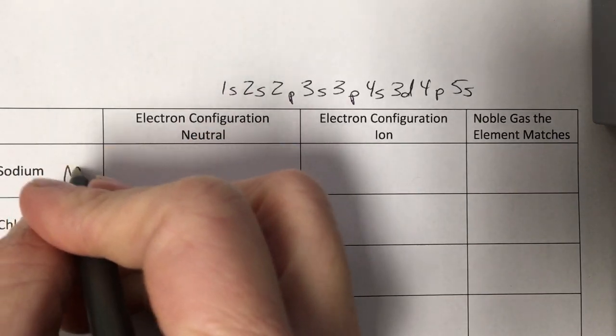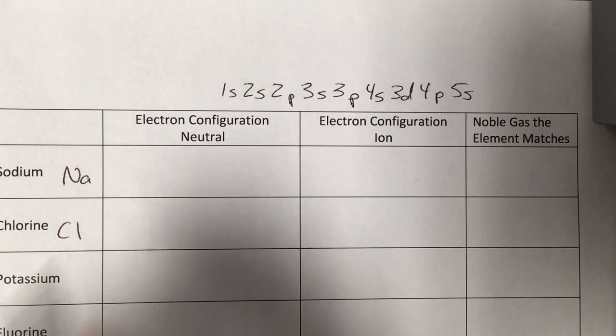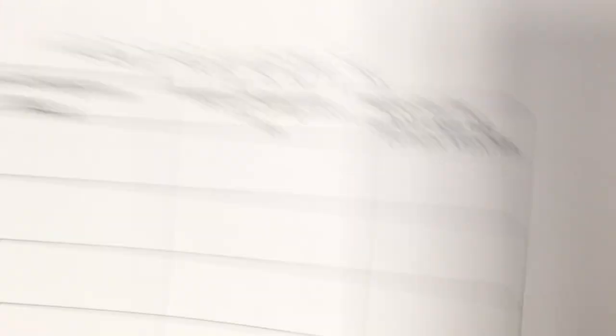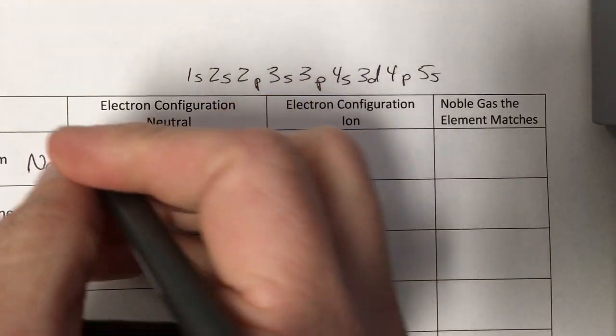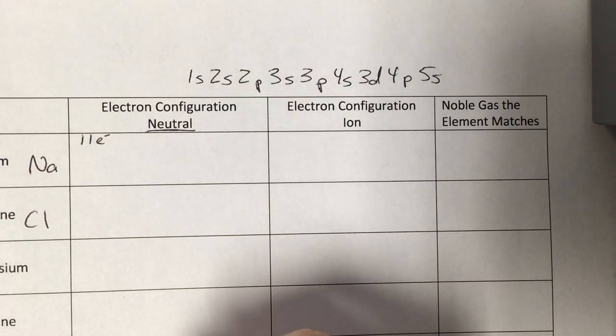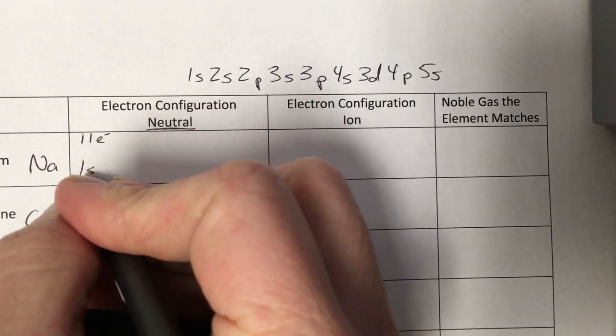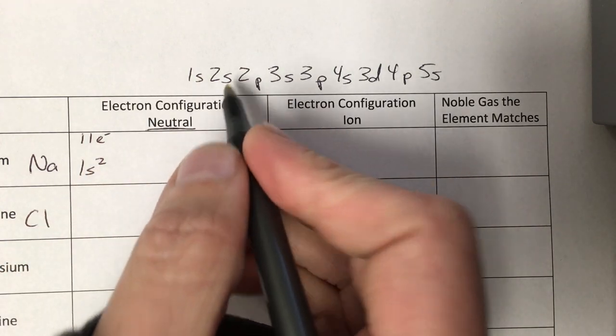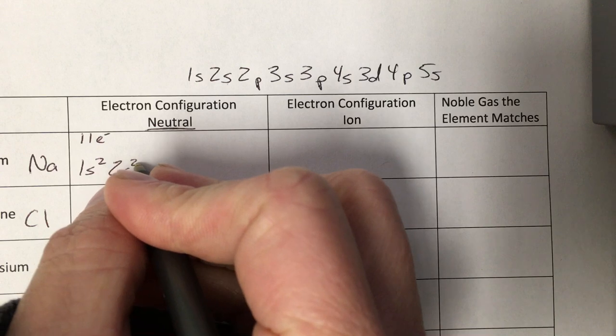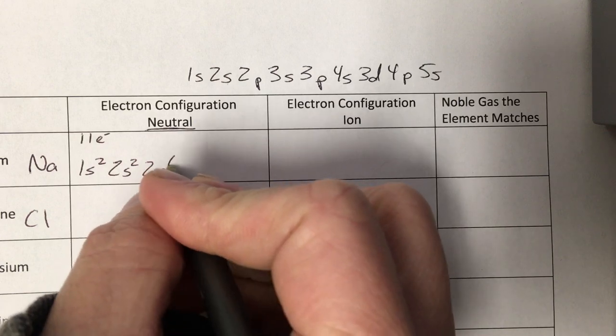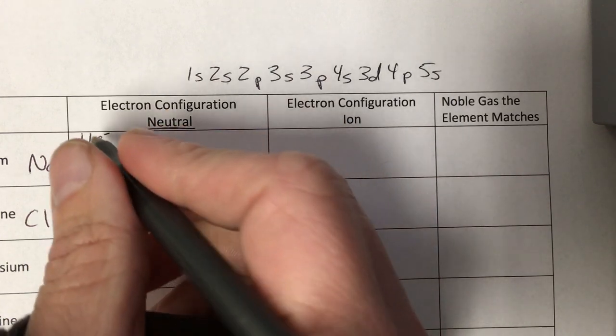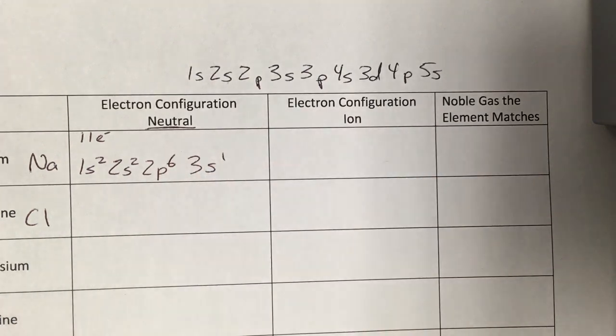So let's write some electron configurations. We're going to start with Na. First is the neutral configuration. For the neutral configuration, we go back to the first thing we did, where we had the neutral atom. We see how many electrons it had. It had 11. So we've got to put 11 electrons into this configuration. The first two go in 1s, because an s can only hold 2. The next two go in 2s, because again, an s can only hold 2. We're up to 4. Next is 2p. p's can hold 6. 2 plus 2 is 4, plus 6 is 10. One more to go. And it goes in 3s.